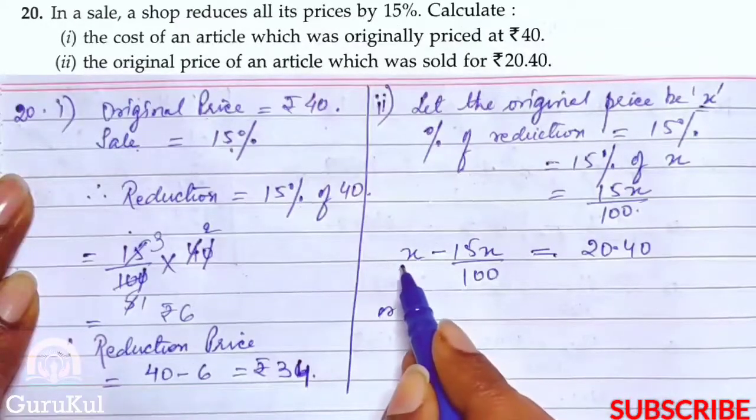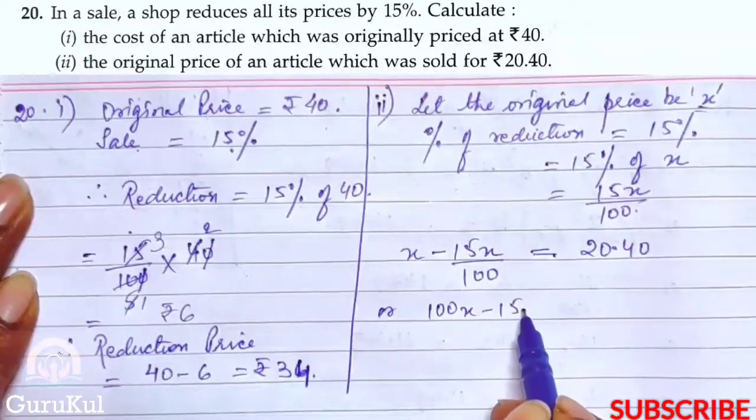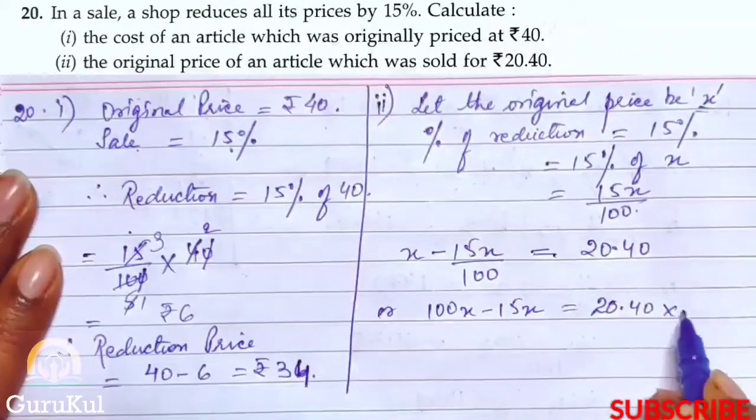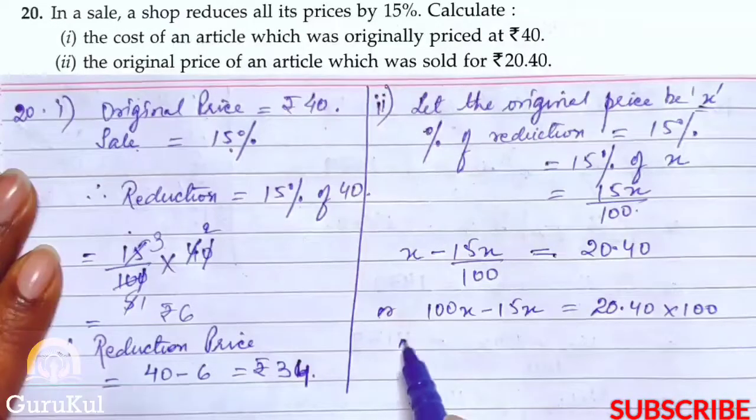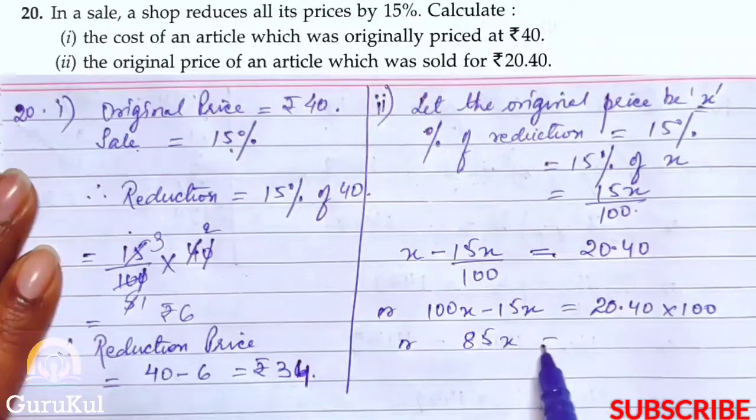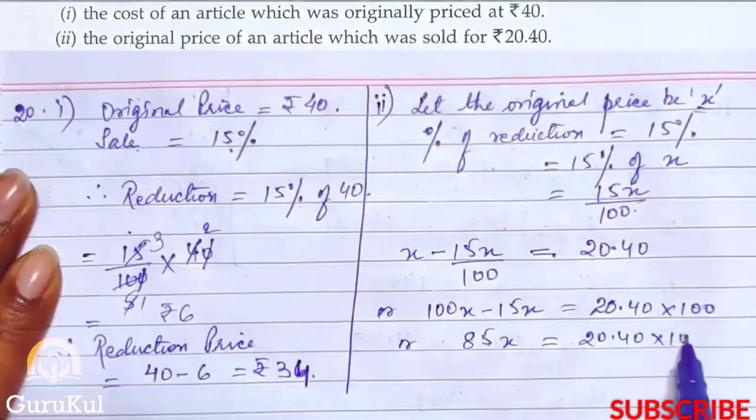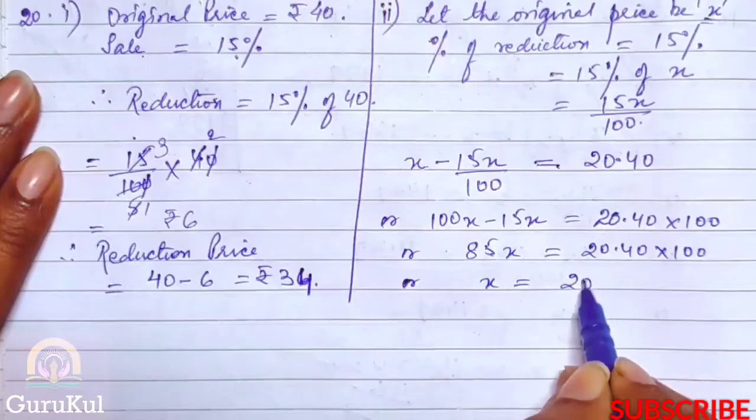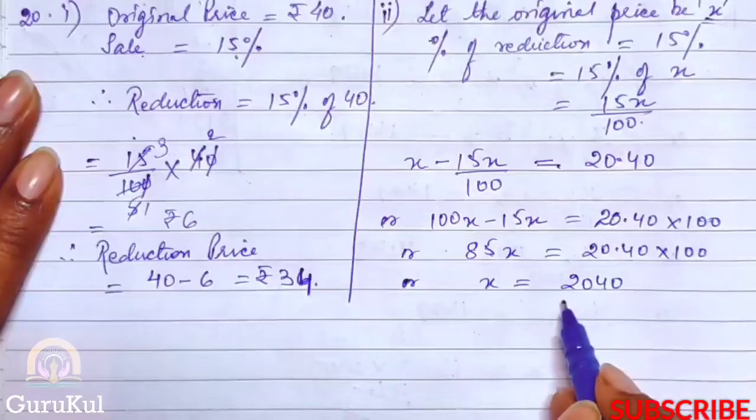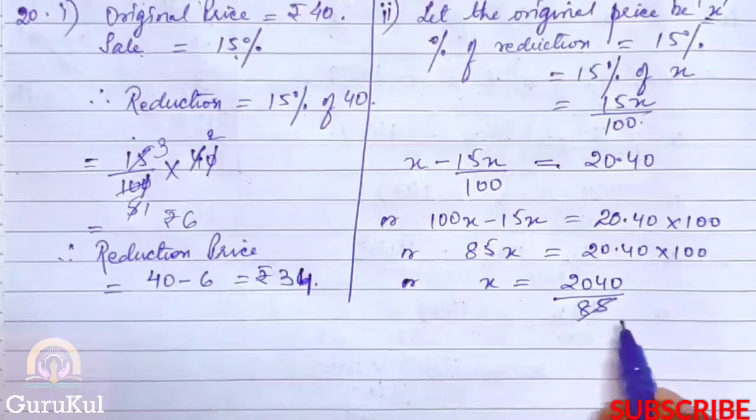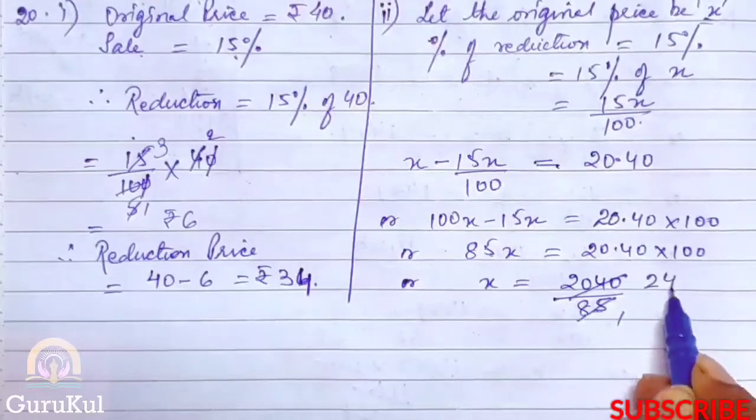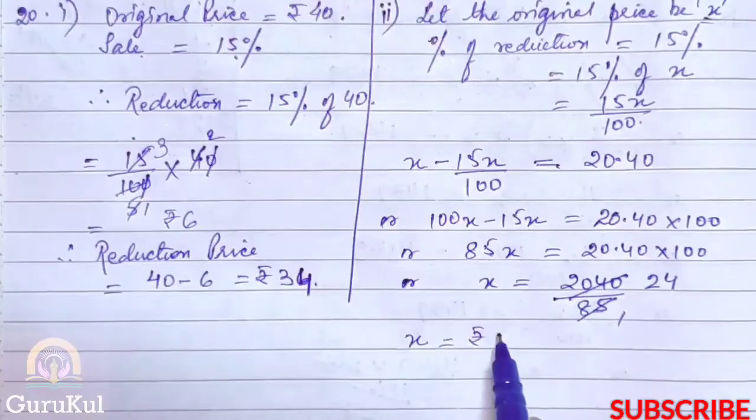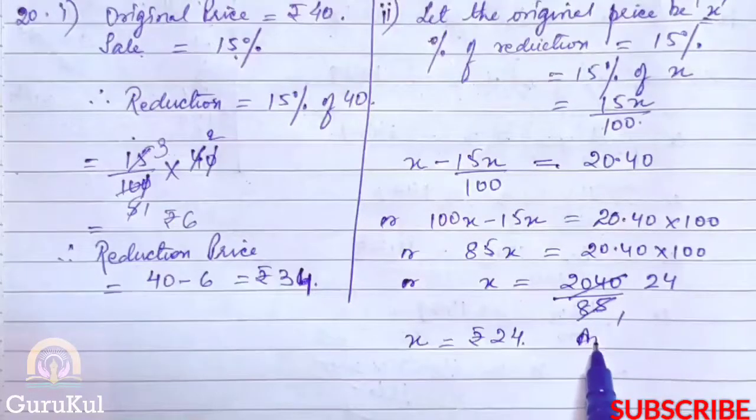Taking LCM, 100x minus 15x is equal to 20.40 into 100. 85x is equal to 2040. x is equal to 2040 by 85. 85 times 24 gives us 2040, so the actual price of the product was rupees 24. Here we have the answer.